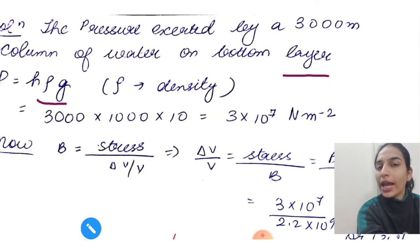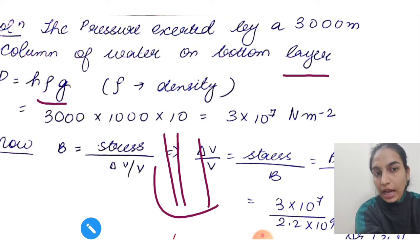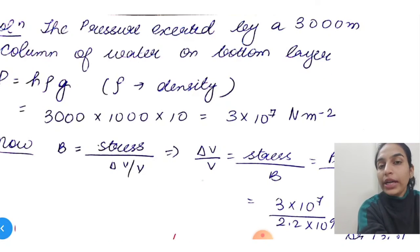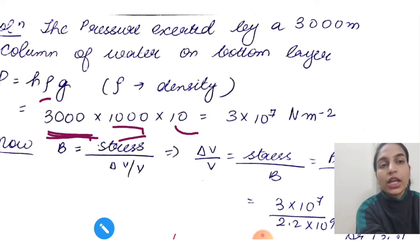The pressure exerted by a 3000 meter column of water on the bottom layer is given by H rho g. This formula is from the next chapter on properties of fluids. As of now, just remember that the pressure formula used when there is a water column is H rho g, where H is the height of the column, rho is the density, and g is acceleration due to gravity. The fluid is water, so density is 1000 kg per meter cube. When you solve it, height given is 3000, it's 1000, g value is 10, so the pressure is 3 into 10 to the power 7.